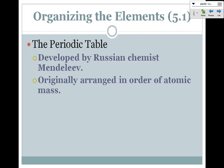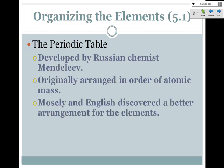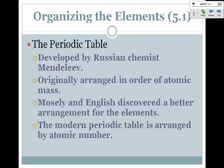It was developed by a Russian chemist named Mendeleev. Originally, the order of the periodic table was in atomic mass. As we've looked at the periodic table recently, it's actually now in the order of atomic number. Moseley and English scientists discovered that arrangement for the elements. So now it's arranged by atomic number, but originally it was arranged by atomic mass, which is the bottom number under each element symbol.